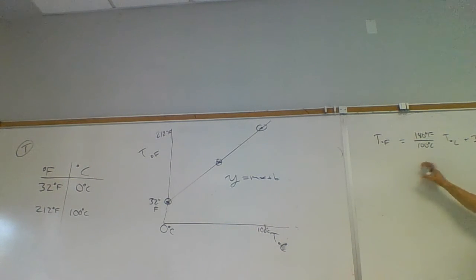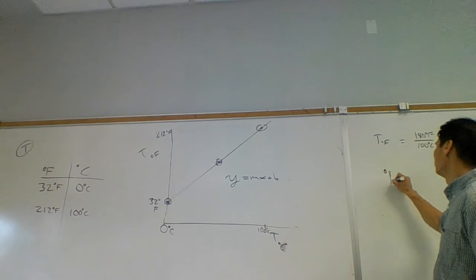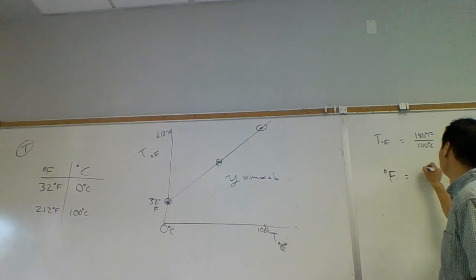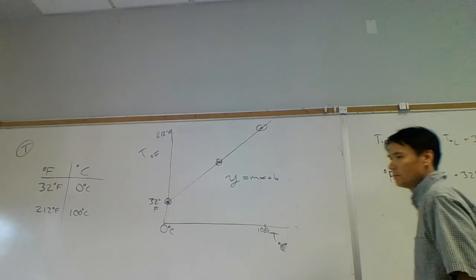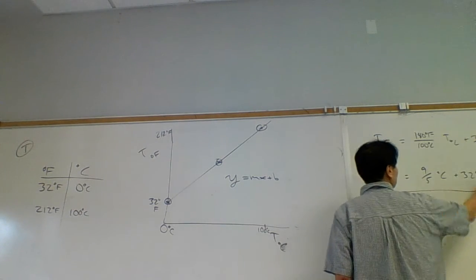And so this is the empirical equation that I get from the observations there. And this equation, most people just memorize this equation and they just write it in a simpler form. Degrees Fahrenheit is equal to 9 fifths degrees Celsius plus 32 degrees. So this is the equation that we do.